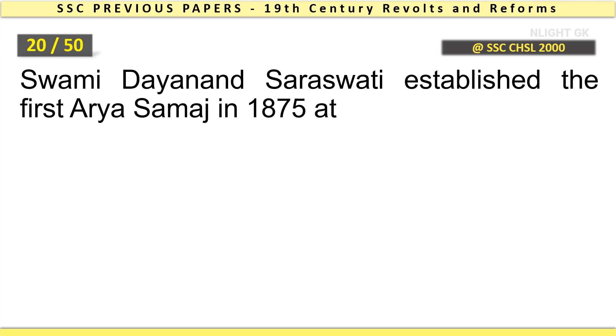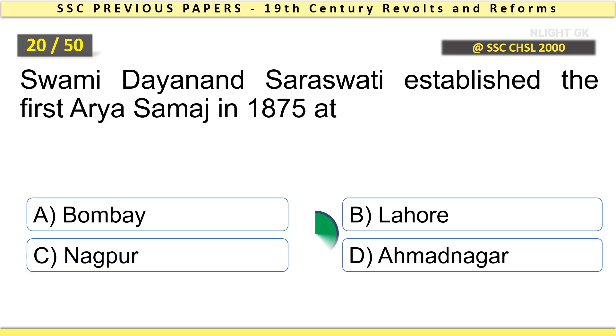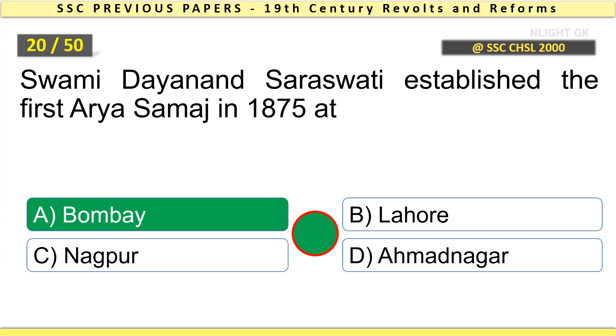Swami Dayanand Saraswati established the first Arya Samaj in 1875 at Bombay.